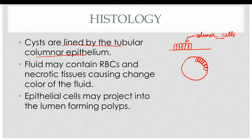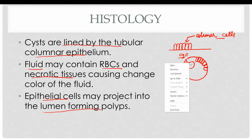The cysts are typically round and lined by columnar epithelial cells. The fluid can be clear, turbid due to necrotic tissue, or hemorrhagic containing RBCs. The epithelial cells may project into the lumen forming polyps, which also contain columnar epithelial cells.